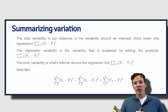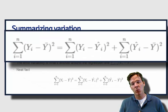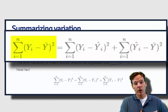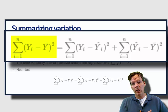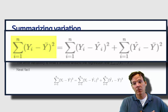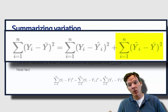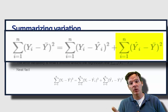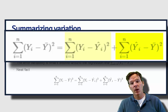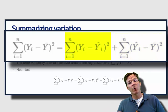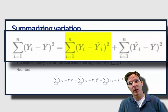And the interesting identity, and it kind of makes sense that this would be the case, is that this total variability, the variability in diamond prices disregarding everything except for where they're centered at, is equal to the regression variability, that is the variability explained by the model, plus the residual variability, the variability left over not explained by the model.